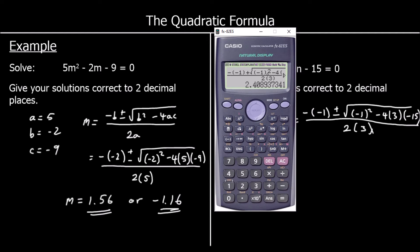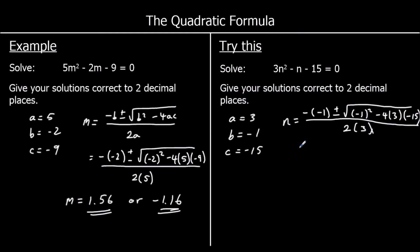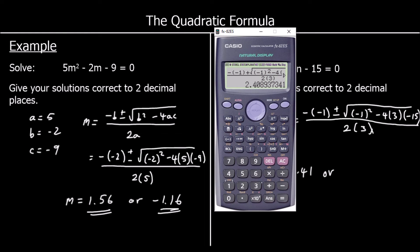So we've got 2.41 — so n is equal to 2.41 as our first answer. To get our second answer we change the plus to a minus, and that's negative 2.08.